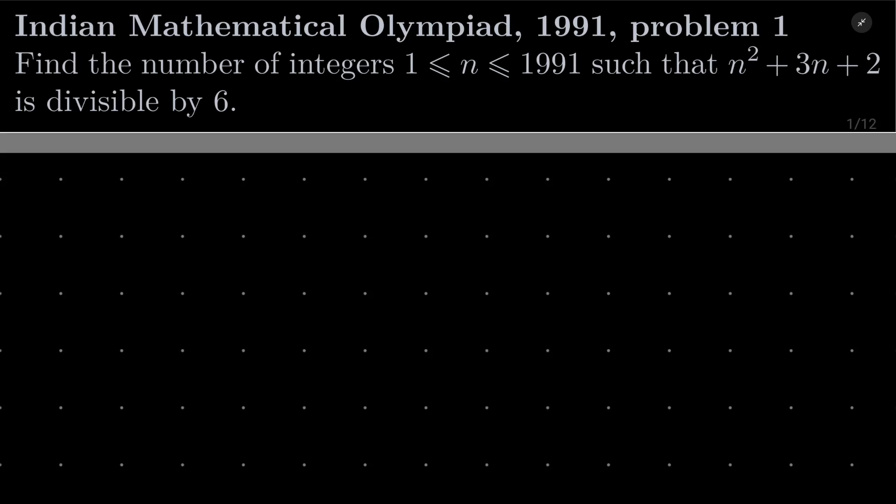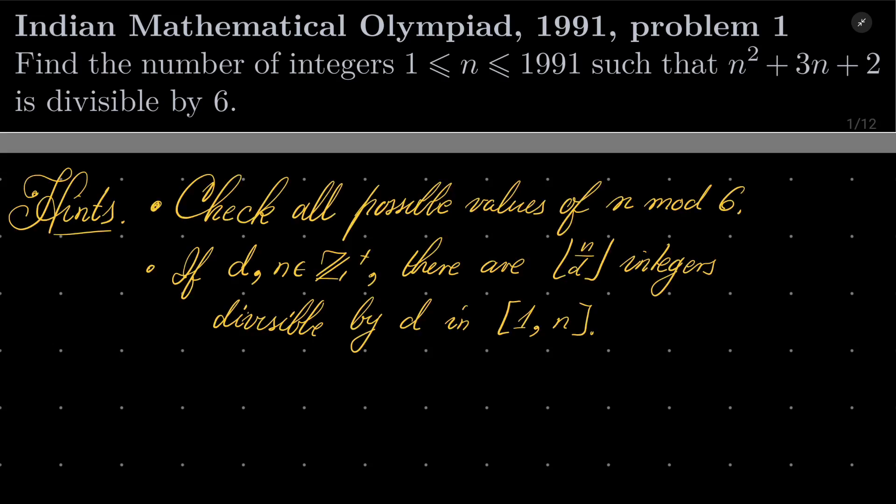It's an easy problem. Here are my hints. Basically, because 6 is a very small number, check all possible values of n modulo 6. Go through every possible remainder upon division by 6 and check in which cases this number is divisible by 6.